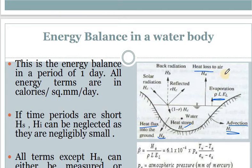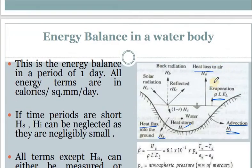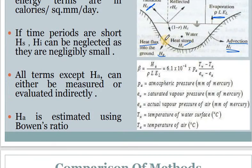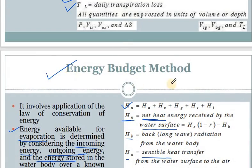Heat loss to air is H_a, heat involved in evaporation is H_e, some of the radiation gets reflected back and that is represented by H_b, and the net solar radiation input is also shown. These are all the different parameters used to determine evaporation by the energy budget method.